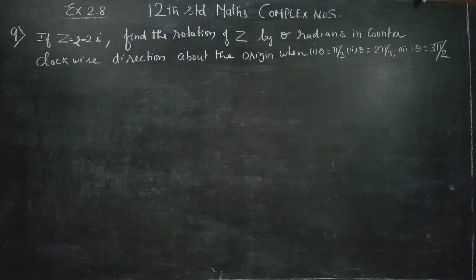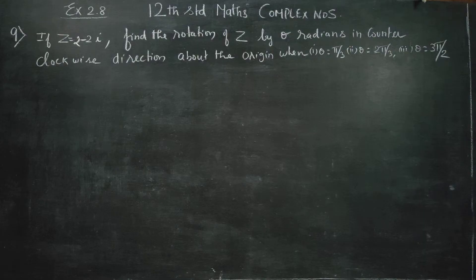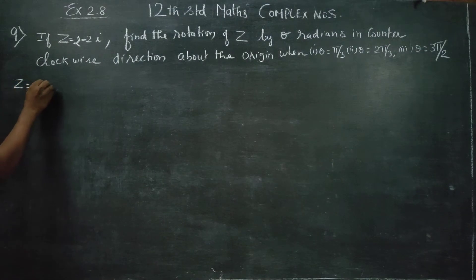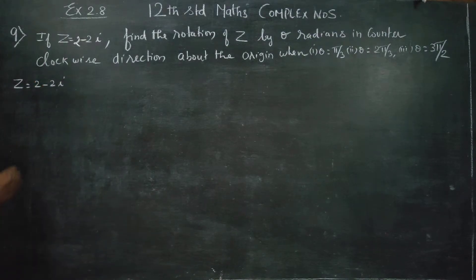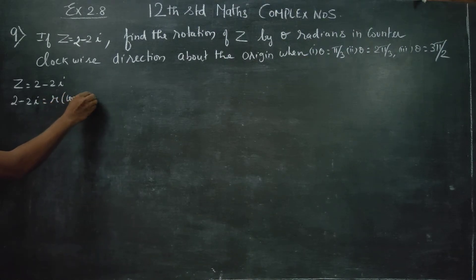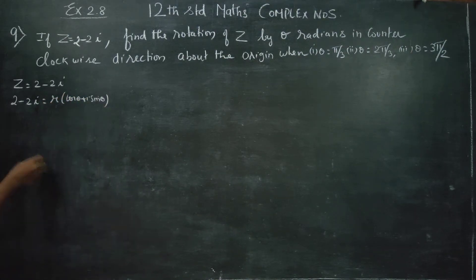Hello, Class 12 standard students. In exercise number 2.8, sum number 9: find the rotation of z in the counterclockwise direction. First of all, my z is equal to 2 minus 2i. I will change 2 minus 2i into polar form. Polar form is r·cos(θ) + i·sin(θ).